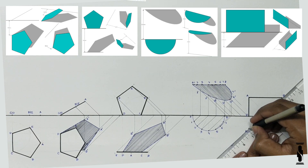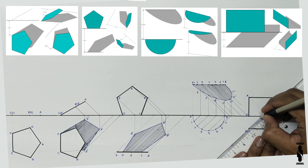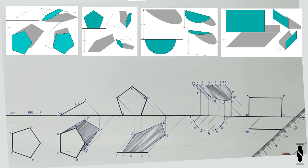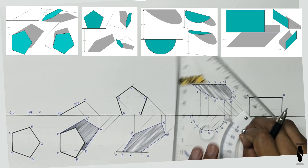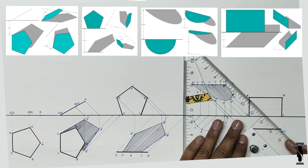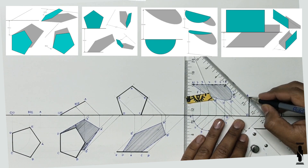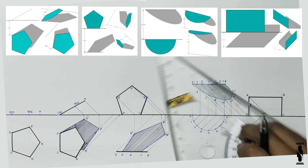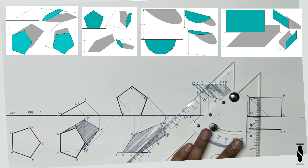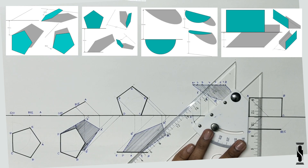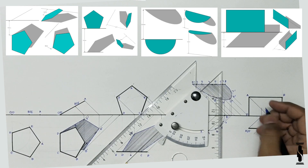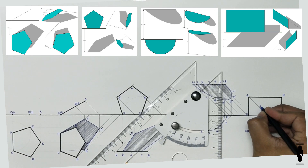Let's start with point A. Draw a light ray on point A in plan and extend it to the ground line. Now draw a light ray on point A in elevation and extend it to the ground line. In this particular case, the light ray of point A in plan strikes the ground line first, so it will move straight in the vertical plane. And wherever it intersects the light ray of point A in elevation, that point will be the shadow of point A — that is A dash.